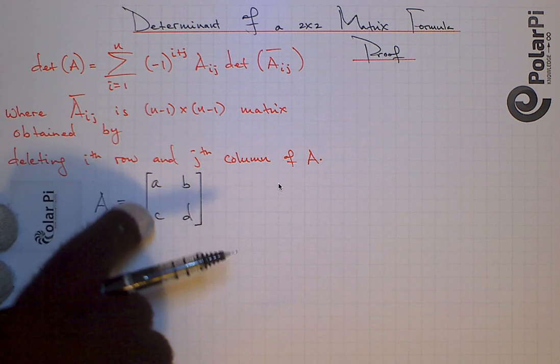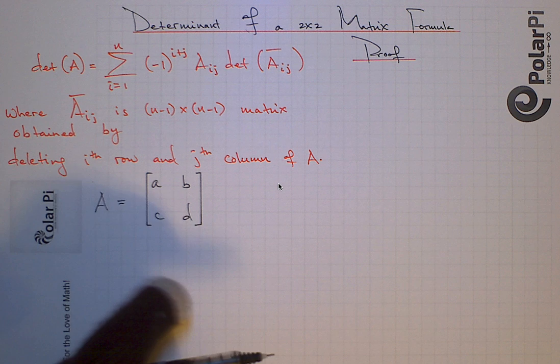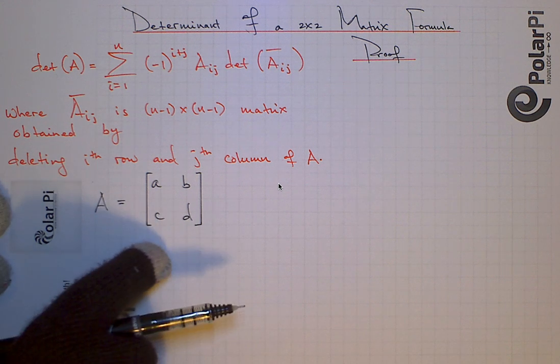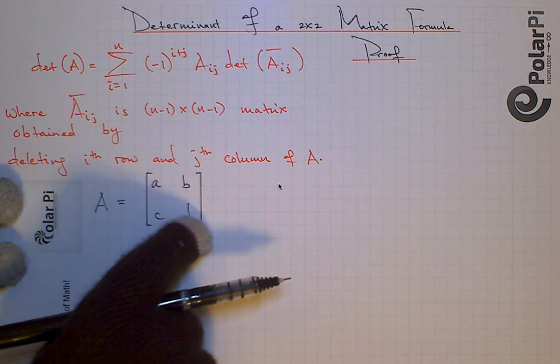to show you that this definition is consistent with the formula I gave in a different video for a 2x2 determinant with entries A, B, C, D.